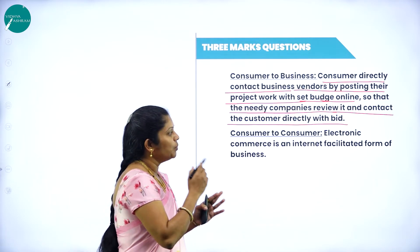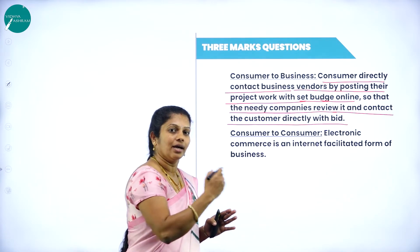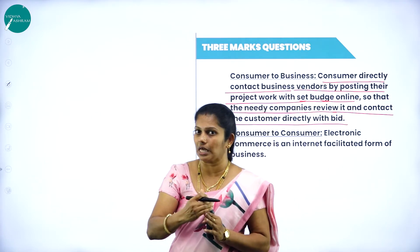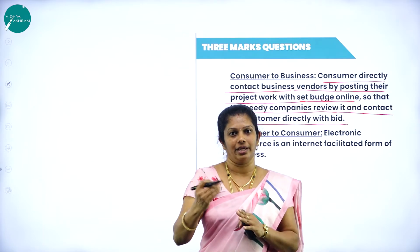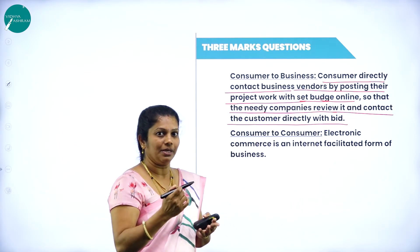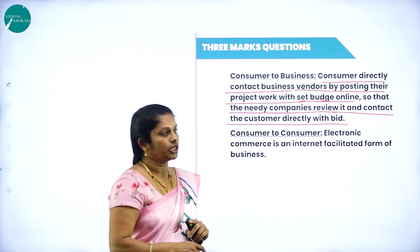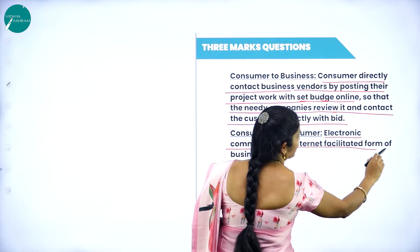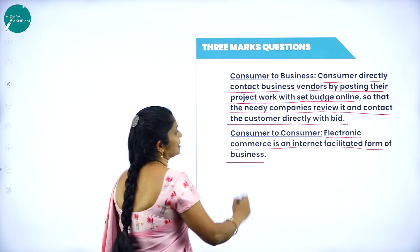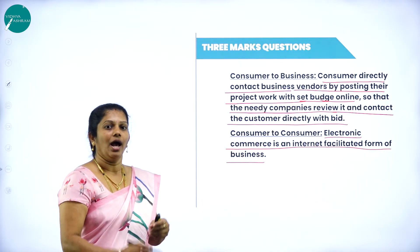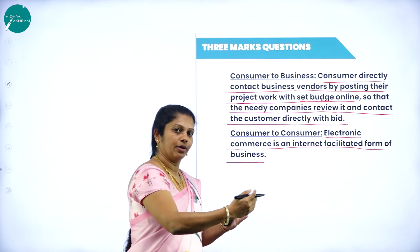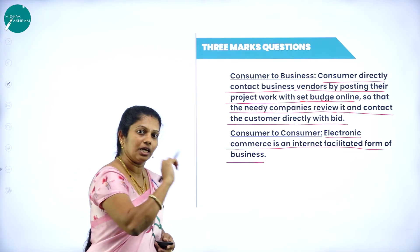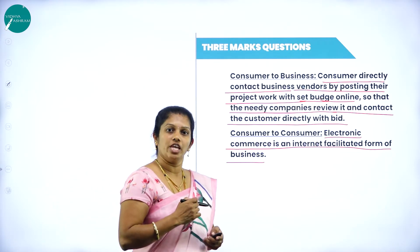The last type is consumer to consumer — both parties are consumers. One person sells their product to another person. Electronic commerce here is an internet-facilitated form of business where both are consumers. I sell a particular product and you sell some other product. These are the different types of e-commerce.